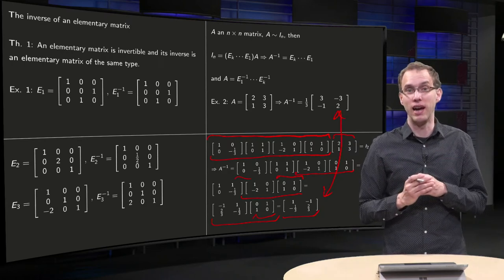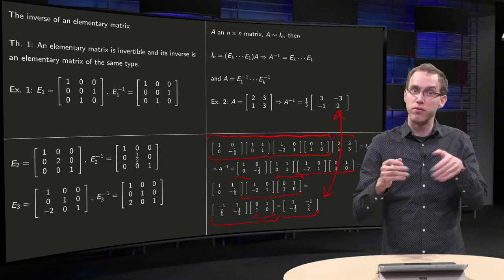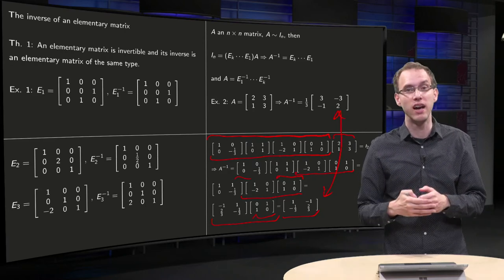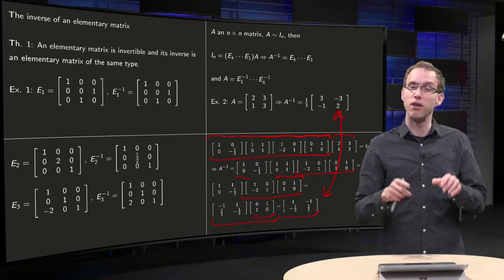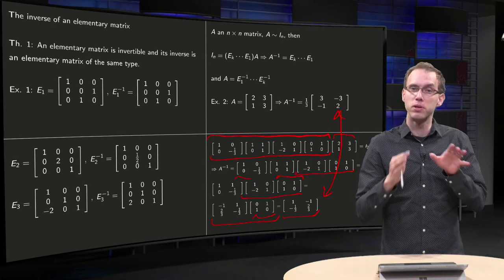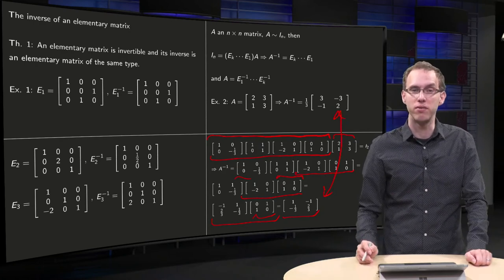So how can you find your A inverse? Well, you figure out the correct elementary matrices from the row reduction of A, put them in the right order, take the product, and there you have your A inverse.